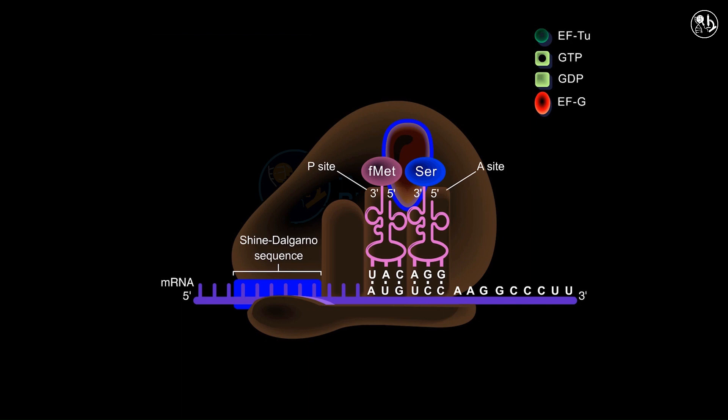The initial step is the breaking of the bond between fMet and its associated tRNA in the P site. Subsequently, a peptide bond is established between the liberated fMet and the serine, which remains attached to its tRNA in the A site.